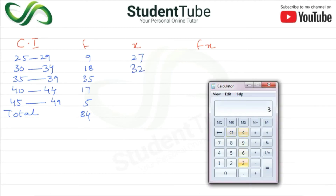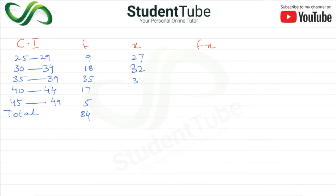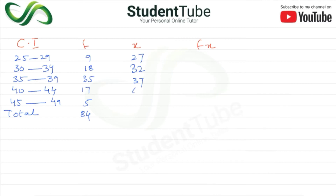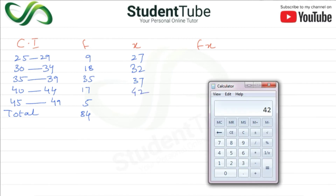For 35–39: (35+39)/2 = 37. For 40–44: (40+44)/2 = 42. For 45–49: (45+49)/2 = 47.